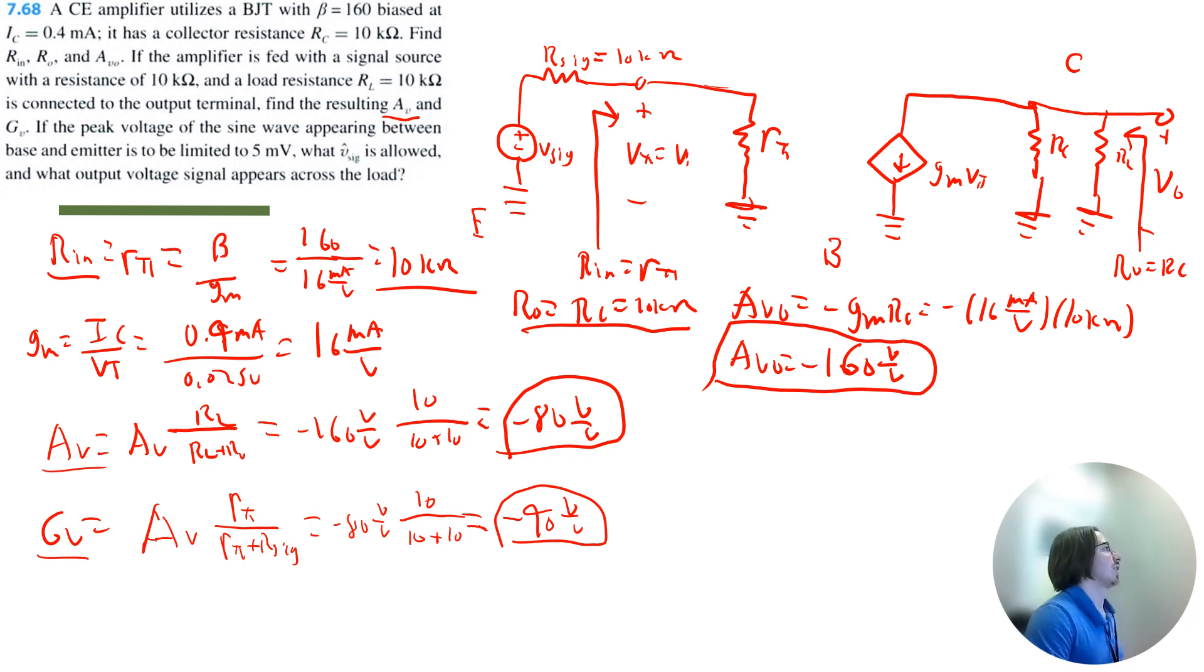If the peak voltage of the sine wave appearing between base and emitter is to be limited to 5 millivolts, what amplitude of signal voltage is allowed? So the peak voltage between base and emitter is referring to right here, this vπ. So our amplitude of vπ is equal to 5 millivolts.